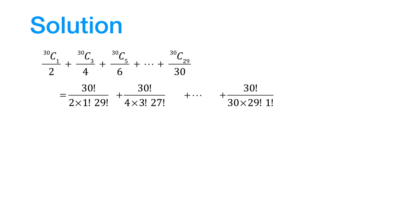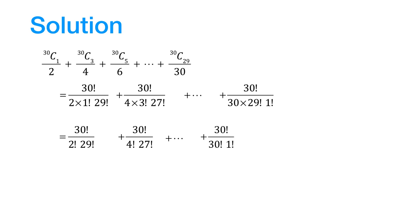Now, in the denominator of the first term here, we have 2 times 1 factorial, which is equal to 2 factorial. In the second term, we have 4 times 3 factorial, which is equal to 4 factorial, and so on. Therefore, the terms of this series can be written down like this, plus this, and so on, right up to the last term.